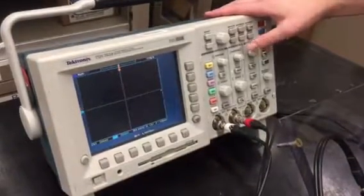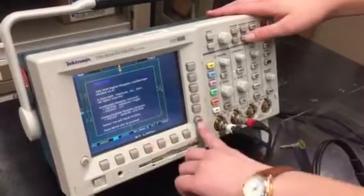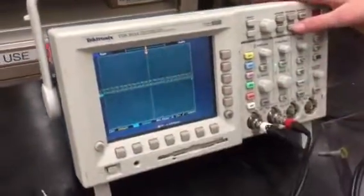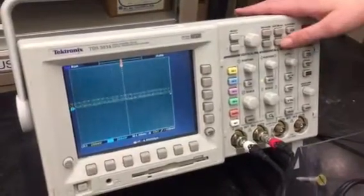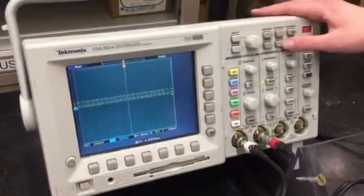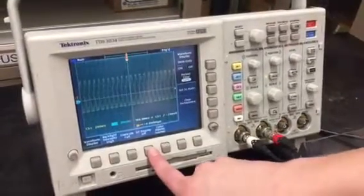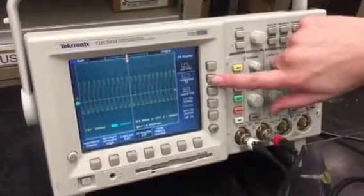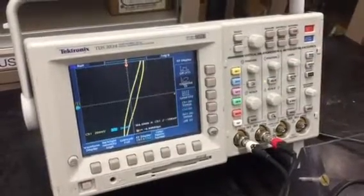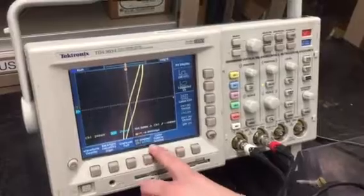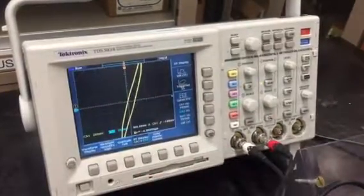So here you can see all of this channel 1 and channel 2 are not coherent at all. So if we push the display button up here and then go to XY display and turn on XY mode so that channel 1 is on the y-axis and channel 2 is on the x-axis.